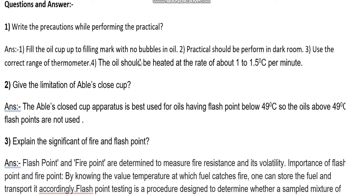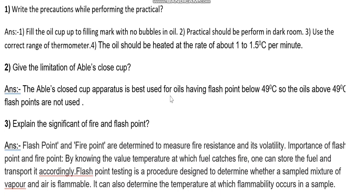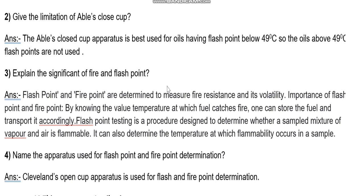Precautions: first, fill the oil cup up to the filling mark with no bubbles in the oil. Second, the practical should be performed in a dark room. Third, use the correct range of thermometer. Fourth, the oil should be heated at the rate of about 1 to 1.5°C per minute. Limitation of Abel's close cup: it is best used for oils having a flash point below 49°C; oils with flash points above 49°C are not suitable for Abel's close cup apparatus.